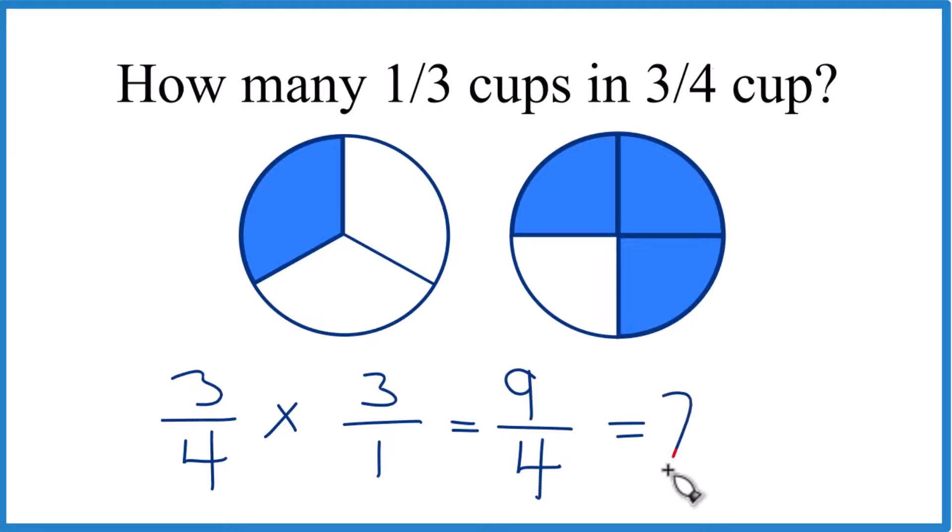Four goes into nine twice. Two times four is eight with one left over, and then we can bring a four across here. So one-third goes into three-fourths of a cup two and one-fourth times.